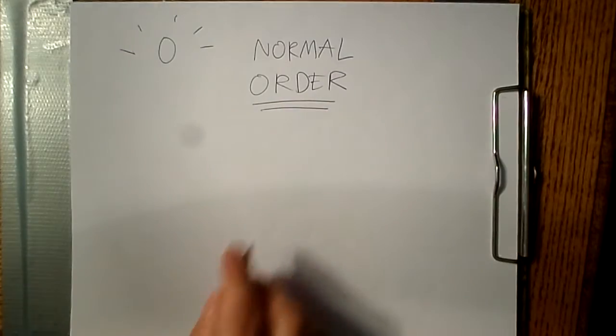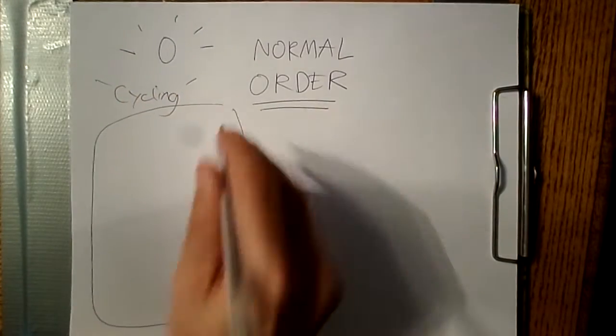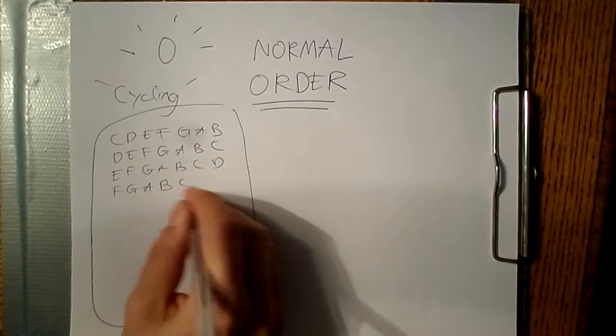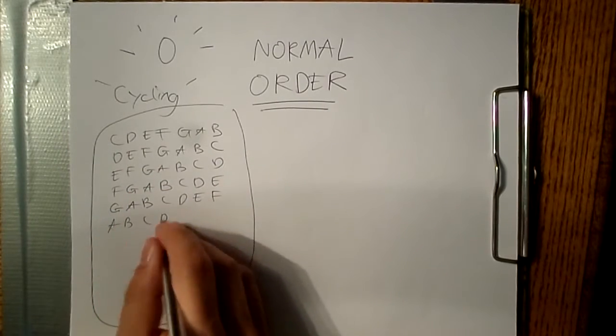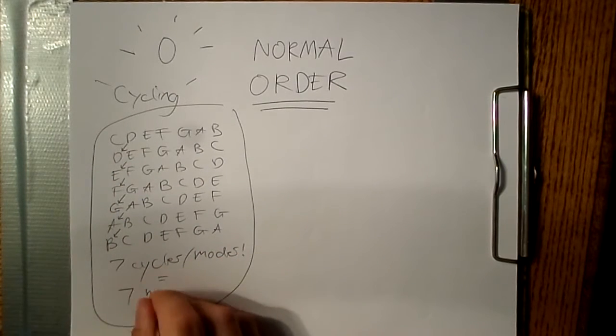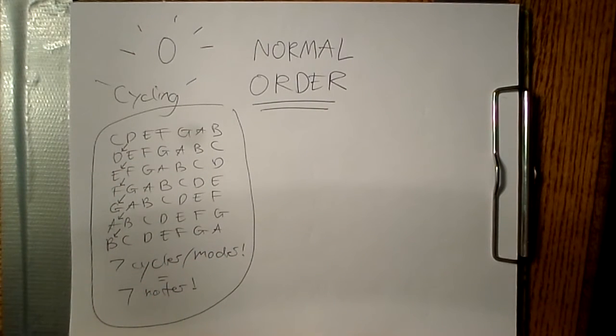Normal orders are just the most compact way of writing out the set. To find that out, we cycle the set. Cycling just means sliding the scale over onto each note, one at a time, just like finding modes of the diatonic scale. So cycles and modes are really just the same thing.